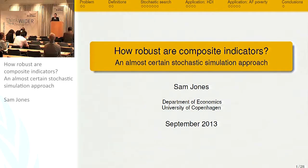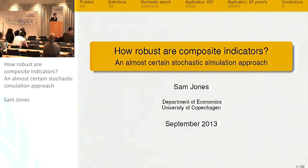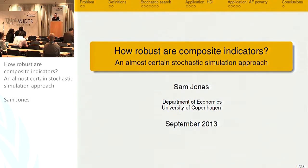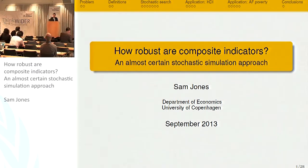Thank you very much. Good afternoon, everybody. I'm pleased to be able to present a paper I've put together looking at a similar topic, which is the question of how do we think about composite indicators, of which multidimensional poverty is one, and particularly this issue of robustness.